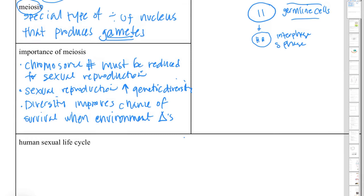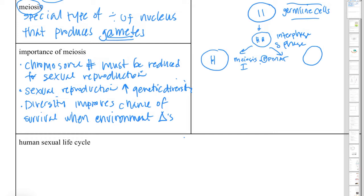In meiosis, the first thing that happens is the cell goes through interphase and replicates its chromosomes during the S phase — same as a non-germline, or somatic, cell. In mitosis we have division of somatic cells, but in meiosis we're dividing germline cells. Then, different from mitosis, there are two cell divisions. In the first division — meiosis I — the chromosome number is actually halved. It's called a reductional division. During prophase of meiosis I, the homologous pairs are pulled apart, not the sister chromatids. The purpose of meiosis I is to reduce the chromosome number in half.